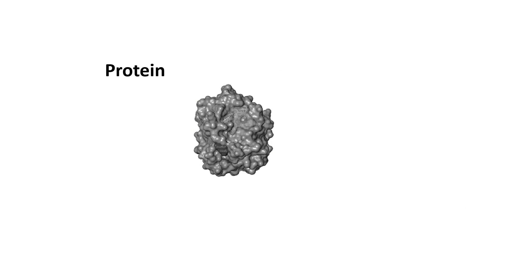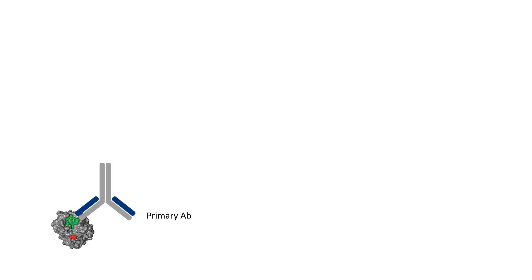The heart of the immunohistochemistry process is the detection of a protein — more precisely an epitope, which is a part of the protein — by an antibody. Our antibody is generated against a specific epitope, so it is destined to recognize that specific epitope. We call this the primary antibody. Against the primary antibody's Fc region, there is a secondary antibody which recognizes the Fc region of the primary antibody as an antigen and binds to it.